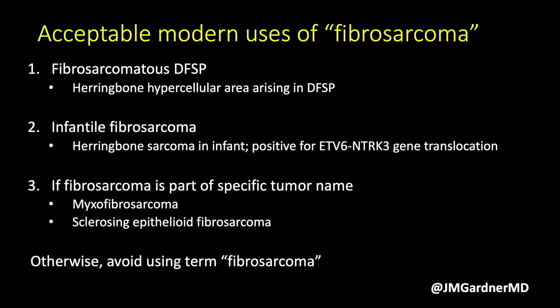In modern soft tissue pathology, here are the times it's okay to call something fibrosarcoma. First, fibrosarcoma in DFSP — some people use the term 'fibrosarcoma arising in DFSP,' which is an alternative nomenclature we just looked at. Second, infantile fibrosarcoma, which is a sarcoma with a herringbone pattern occurring in infants. It is a translocation sarcoma with a gene fusion of ETV6-NTRK3 — a molecularly defined tumor that is quite rare but has a very good prognosis, so it's important to diagnose correctly.